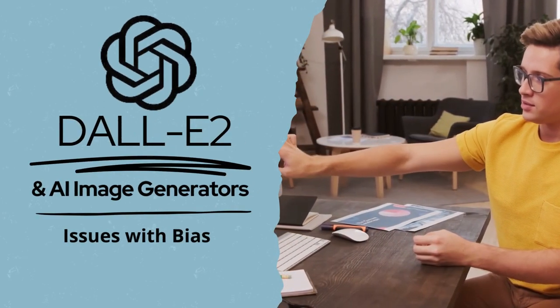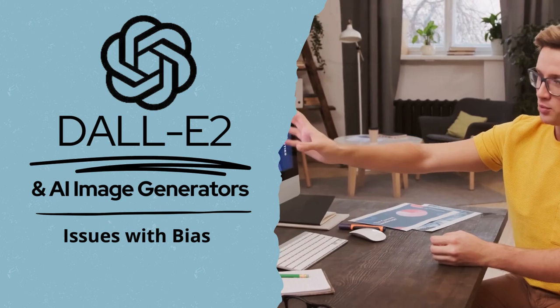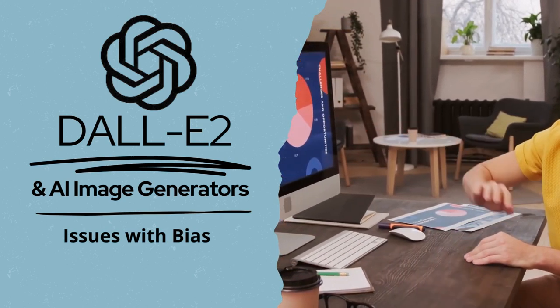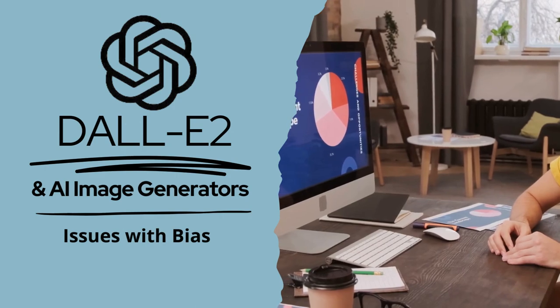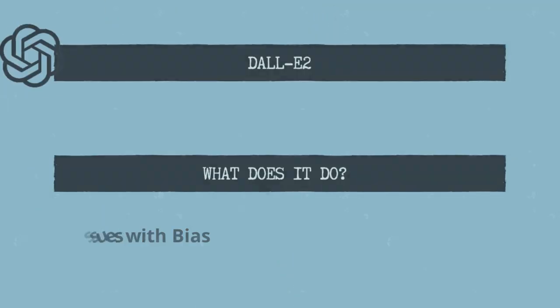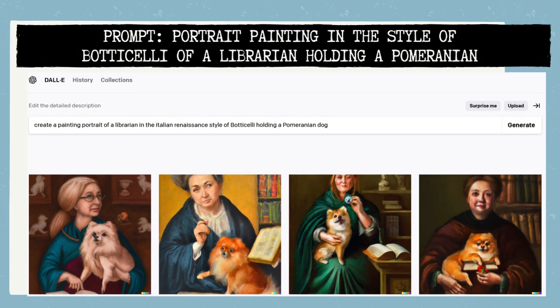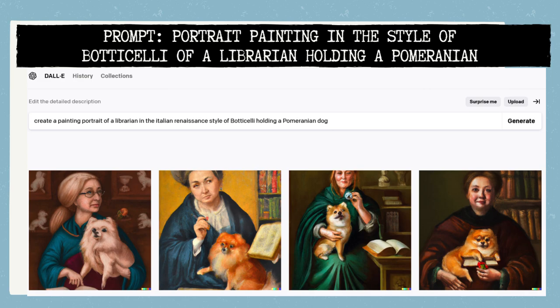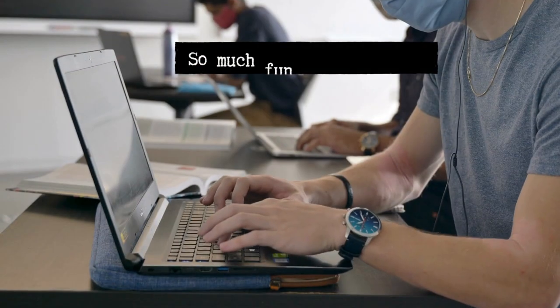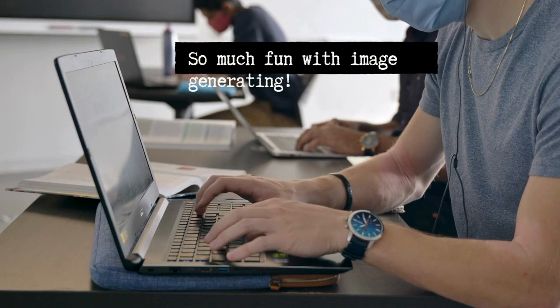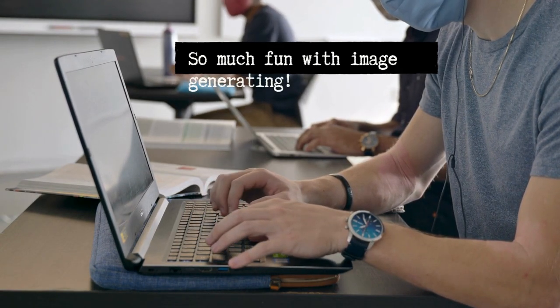DALL-E 2 is an AI system that can create realistic images and art from a description in natural language. It's a really fun tool to play with, but it is really limited for the free searches. You can ask for it to create an image in a particular style or within a specific medium. I prompted it to create a painting of a librarian in the style of Botticelli holding a Pomeranian dog, and it came up with four options. You can see it would be very easy to go down the rabbit hole and have it generate more and more images.